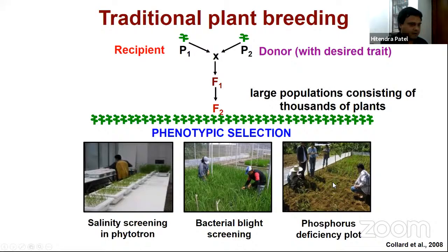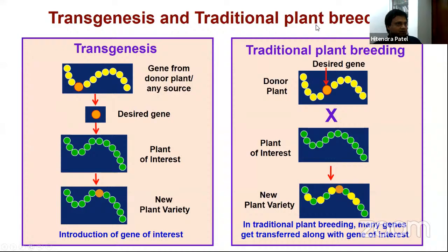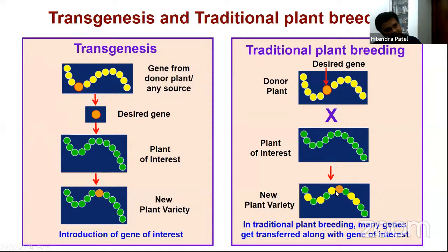Comparing transgenesis and traditional plant breeding: in transgenesis, a single desired gene from any source is introduced into the plant of interest — we get only the gene of interest. But in traditional plant breeding, the donor plant is crossed with the plant of interest, so not only the desired gene but also additional unwanted regions get introduced.